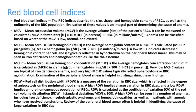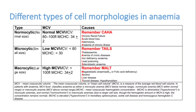Normocytic anemia: MCV 80–100, MCHC 34 ± 2. Causes include chronic renal failure, acute blood loss, hemolysis, and anemia of chronic illness — remember the mnemonic AHA. Microcytic anemia: MCV low. Remember the mnemonic TAILS — Thalassemia, Anemia of chronic illness, Iron deficiency anemia, Lead poisoning, Sideroblastic anemia. The most important is iron deficiency anemia, including chronic blood loss from the intestine due to worm infestation, malignancies, or ulcers.